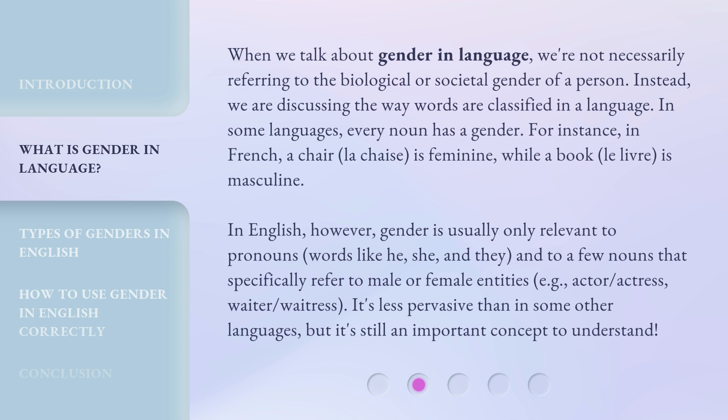In English, however, gender is usually only relevant to pronouns — words like he, she, and they — and to a few nouns that specifically refer to male or female entities, for example: actor, actress, waiter, waitress. It's less pervasive than in some other languages, but it's still an important concept to understand.